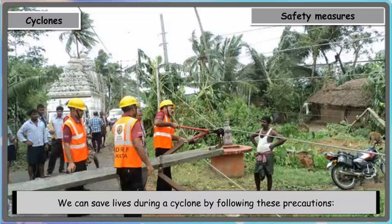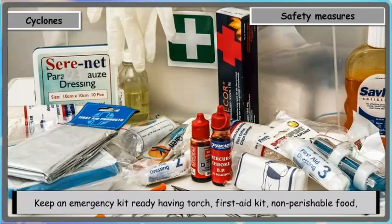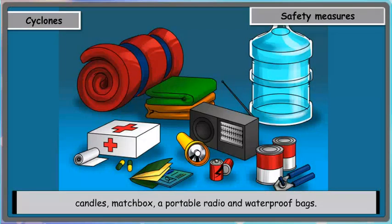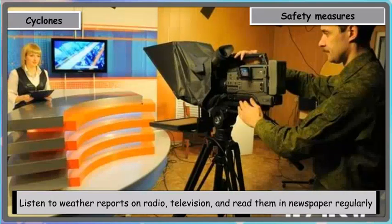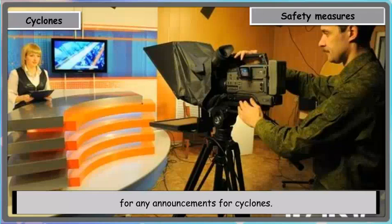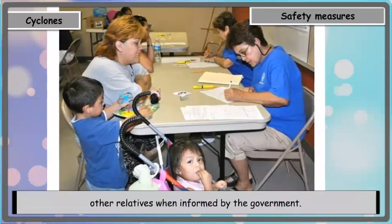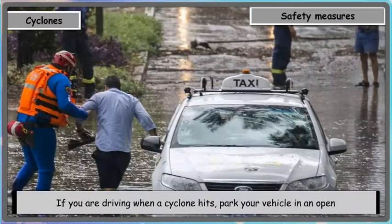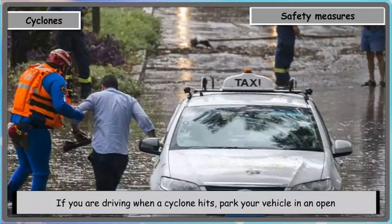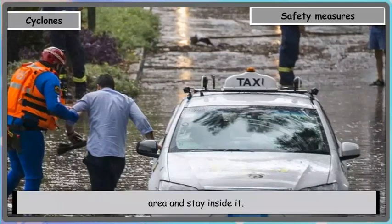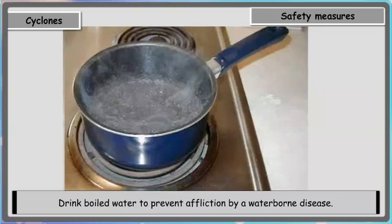Safety measures — we can save lives during a cyclone by following these precautions: keep an emergency kit ready having a torch, first aid kit, non-perishable food, candle, matchbox, a portable radio, and waterproof bags. Listen to weather reports on radio and television, and read them in newspapers regularly for any announcements about cyclones. If you are driving when a cyclone hits, park your vehicle in an open area and stay inside it. Drink boiled water to prevent affliction by a water-borne disease.